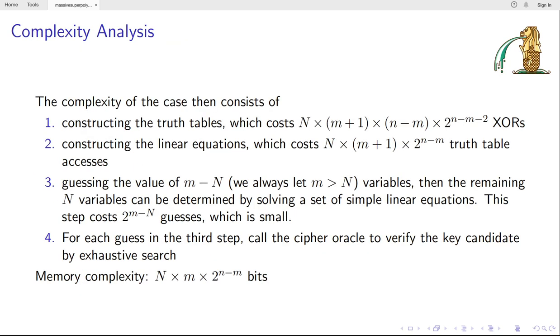The time complexity consists of four parts. Firstly, constructing the truth tables, n minus m plus 1 tables and (n-m) times 2^(2n-m-2) is the cost to construct one table. Then we can access the tables and construct the linear equations. And this causes such complexity. In the third step, we guess the value of m minus N bits. Then the remaining N bits can be determined by solving a set of simple linear equations. And this step causes 2^(2n-m) guesses, which is small.